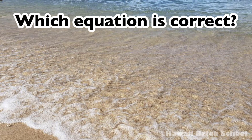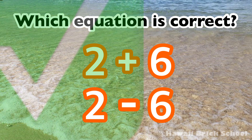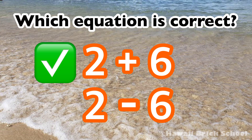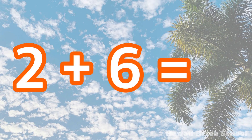Which equation is correct: 2 plus 6, or 2 minus 6? The correct equation is 2 plus 6. 2 plus 6 is 8.